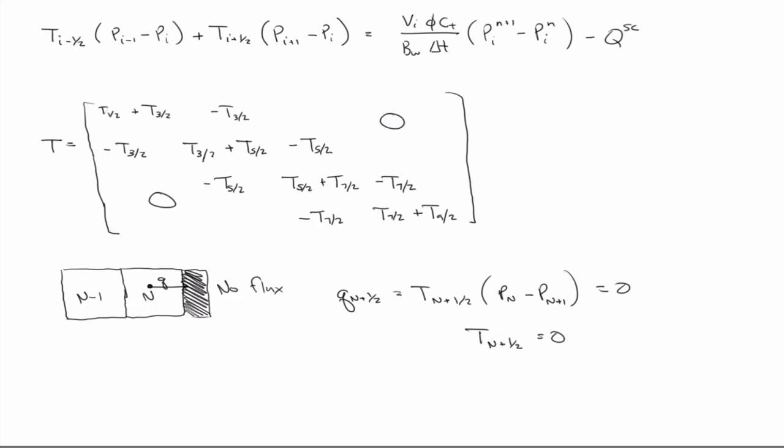So in our four-grid block example, this t, n plus 1 half is this t to the 9 halves, so that's zero. So we just leave behind the t to the 7 halves. That's a big n, right, so the number of, sorry, the number of grid blocks, the total number of grid blocks is big n, capital n. So the time step is lowercase.